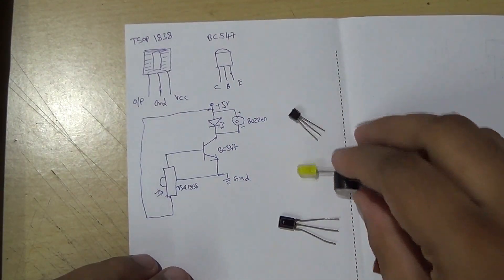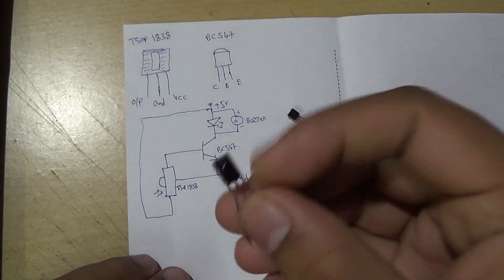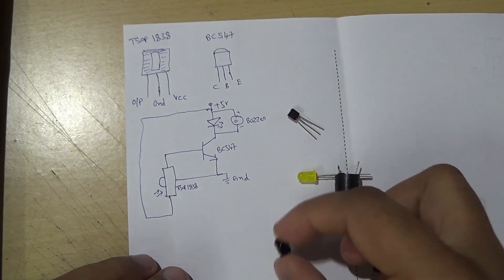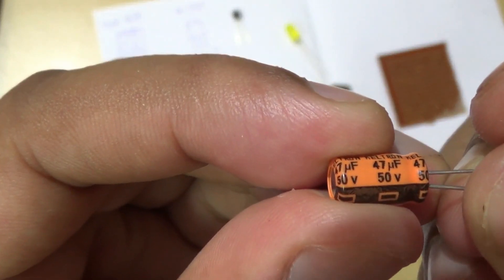For this project we need one IR sensor, TSOP1838, BC547 transistor, LED and a buzzer and a capacitor.